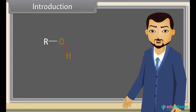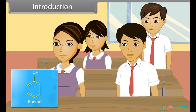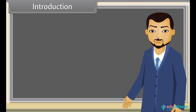The hydroxyl group is a functional group consisting of a hydrogen atom covalently bonded to an oxygen atom. Now, can anybody tell me what is phenol? Yes, teacher. Phenol is an organic compound where one hydrogen attached to a benzene ring is replaced by a hydroxyl group. Very good, Sunil. In this lesson we will learn about alcohols, phenols and ethers.